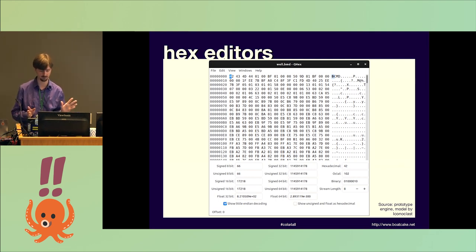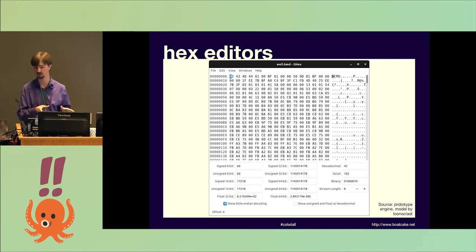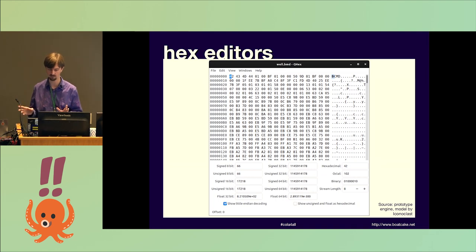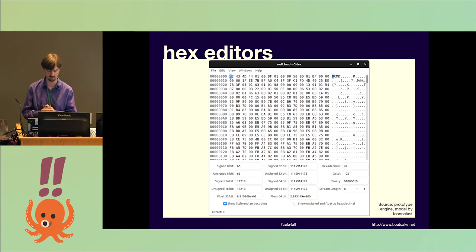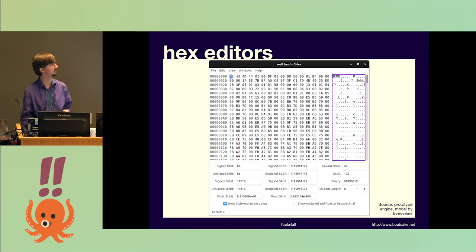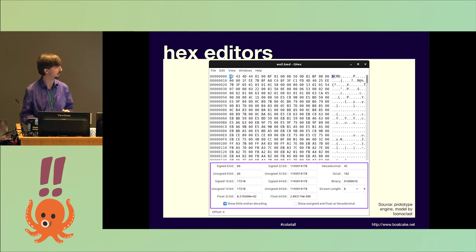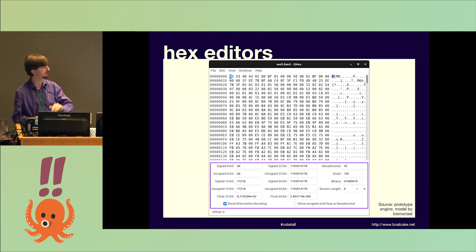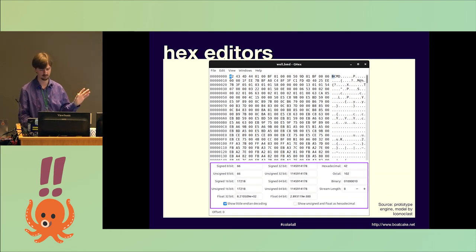If you've never seen a hex editor before, this is what it looks like. The left column is your position. The middle column is the actual contents of the file in hexadecimal. The right column is the same contents interpreted as ASCII, with little dots for things that aren't printable. And on the bottom there is what I call the decode view — it's the contents right next to the cursor interpreted in different data formats. Mine doesn't have a string view, but some others do. Things like floating point and so on.